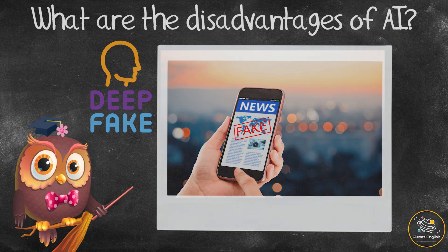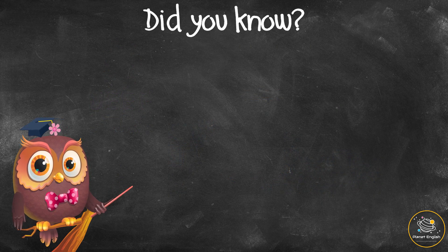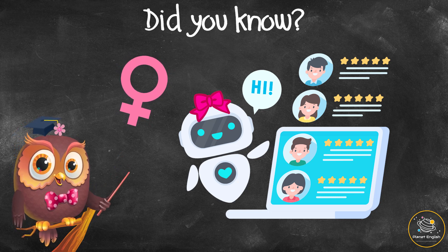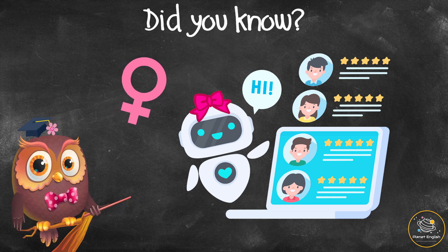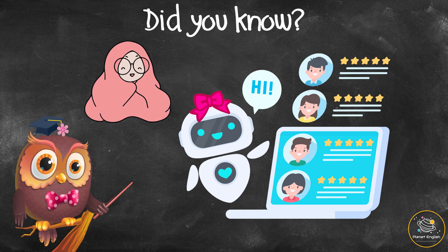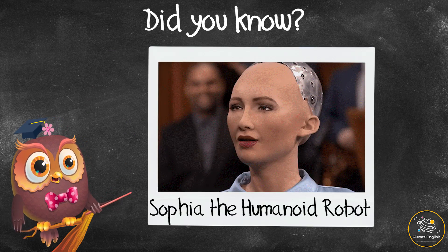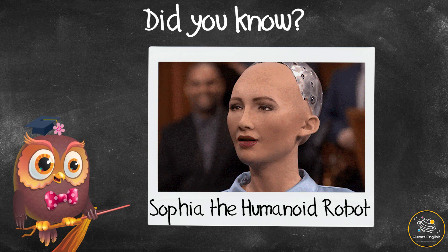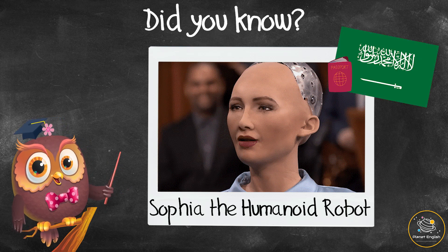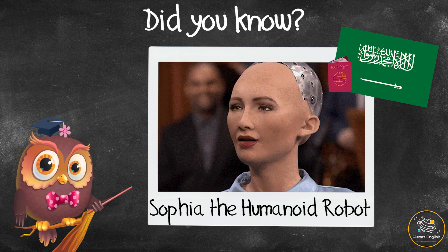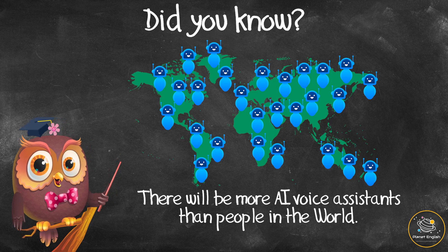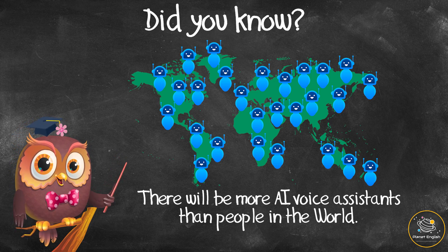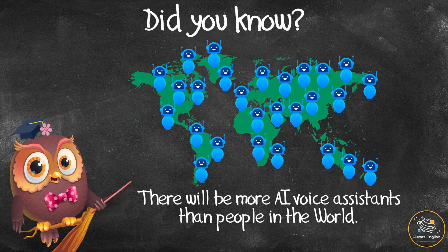Did you know? Most AI chatbots are female, like Siri and Alexa. Tech companies and robotic scientists believe that people are more naturally drawn to feminine sounds because they make us feel warm and comfortable. Sophia is a humanoid robot with artificial intelligence that was activated in 2016. In 2017, she was granted Saudi Arabian citizenship, becoming the first robot to receive legal personhood in any country. It is believed that very soon there will be around 8.4 billion AI-powered digital voice assistants — more than the total global population.